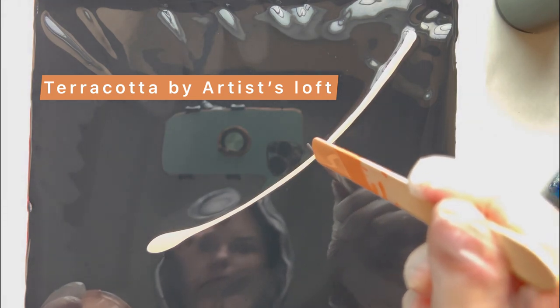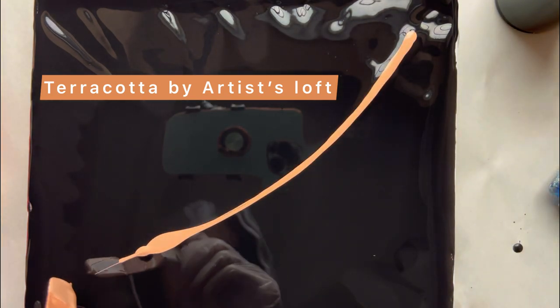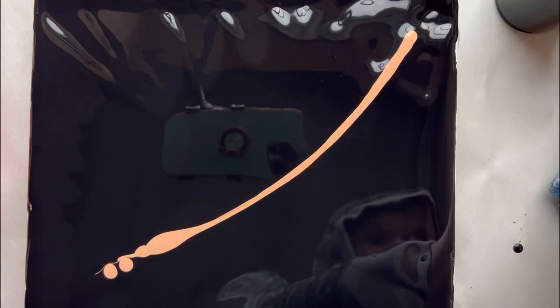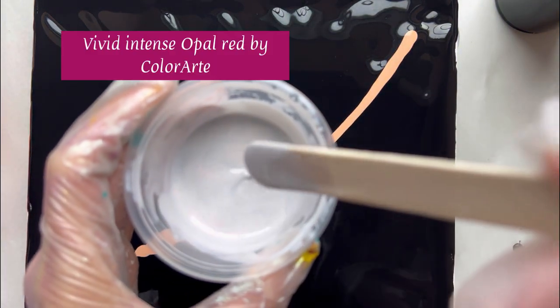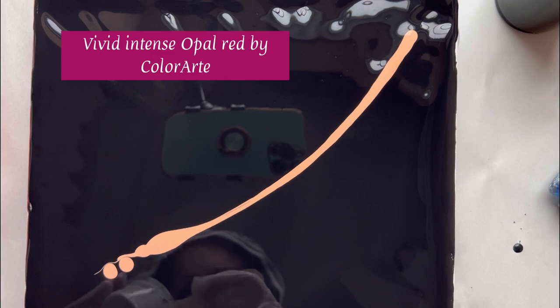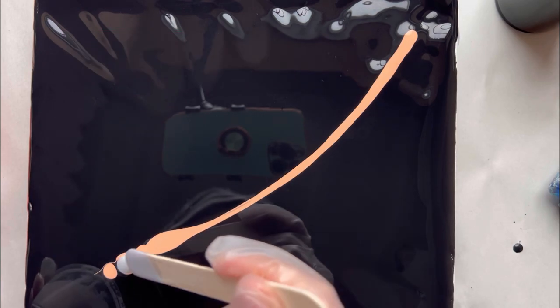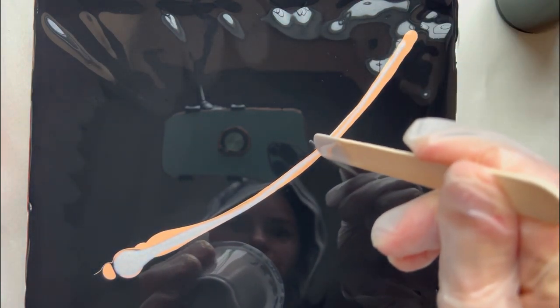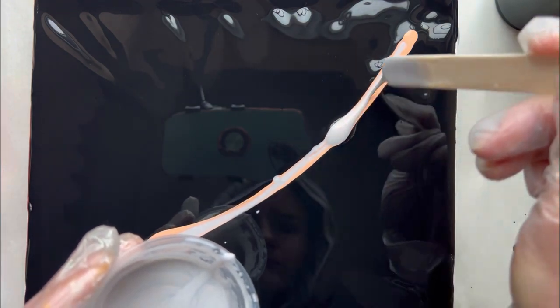First I decided to layer in a light opaque color. I went with terracotta by Artist's Loft Level 2 paint just to brighten up the colors that I would be layering on top of it, then I'm going with vivid intense opal red by Color Art, layering it on top of terracotta.